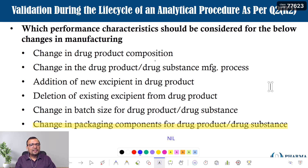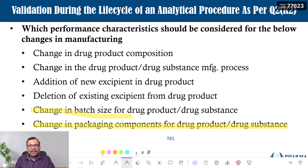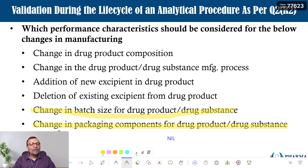If the change in packaging components is done for the betterment of the product, it may not need any validation — provided there are no extractable or leachable issues, and there is no negative impact on drug product or drug substance degradation. In summary: change in drug product composition is a significant change requiring method revalidation; change in manufacturing process is also significant and needs partial revalidation; addition of new excipient may need some partial validation; deletion of excipient generally does not; change in batch size does not require partial validation; and change in packaging components for product betterment also does not require partial validation. In the next video we will talk about changes in the analytical procedure.